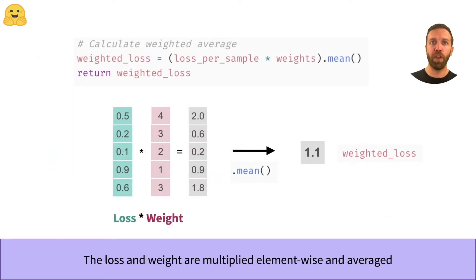Now we're almost there. We only need to combine the loss and the weight per sample. We do this with elementwise multiplication and then average over all samples in the batch. In the end, we have exactly one loss value for the whole batch. And this is the whole necessary logic to create a custom weighted loss.